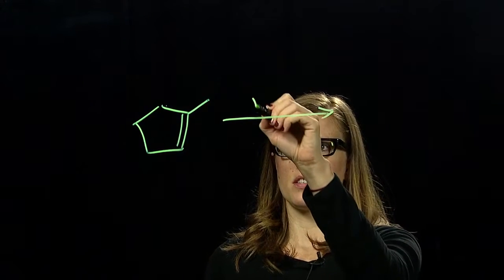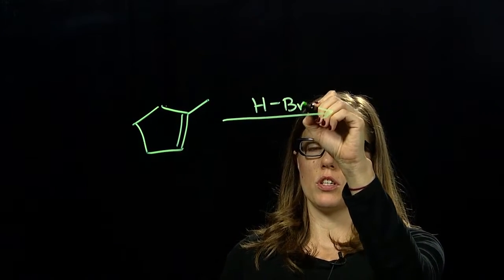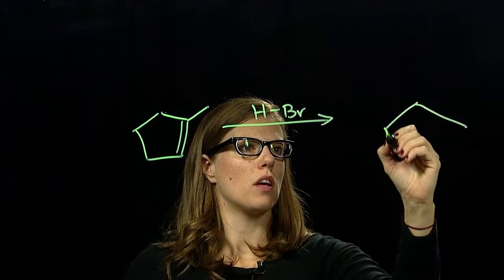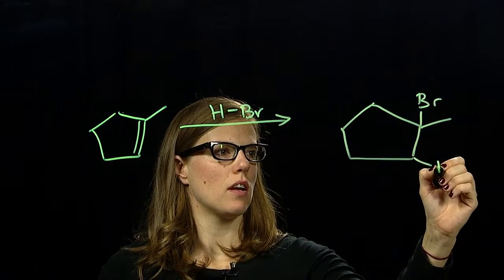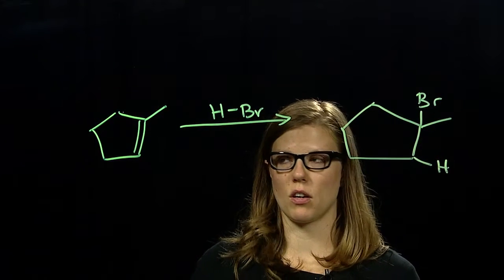This is an asymmetrically substituted double bond, and so we can have multiple products. But addition of HBR across this double bond happens in a regioselective manner, and we get one product, which the bromine is attached to a tertiary carbon and the hydrogen is attached to the secondary carbon.